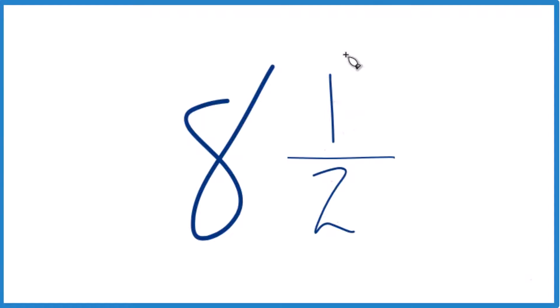So let's write the mixed number 8 and 1 half as an improper fraction. And here's how you do it. You take 8, the whole number, multiply by 2. 8 by 2, that's 16.